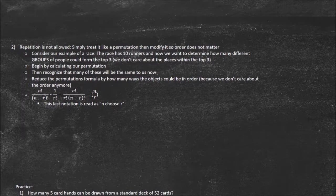Consider our example of a race. The race has 10 runners and we want to determine how many different groups of people could form the top three — we don't care about the places within the top three, just how many groups could be in it. Begin by calculating the permutation, then recognize how many of these will be the same to us, and reduce the number of permutations by the ways the objects could be ordered, since we don't care about order anymore.